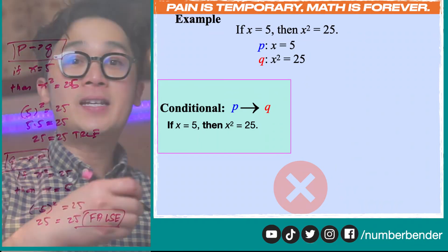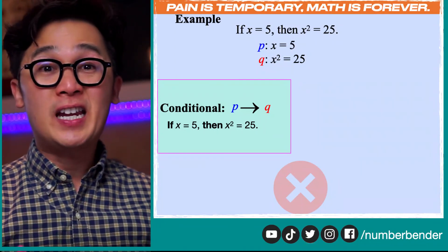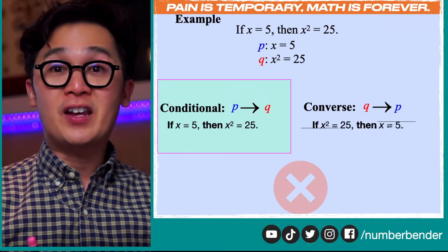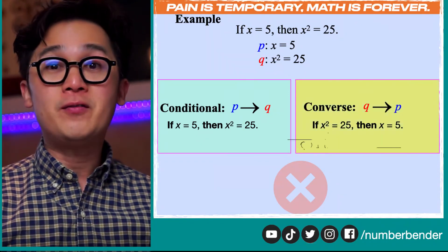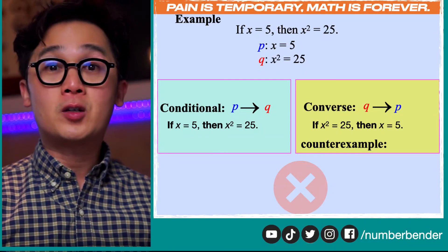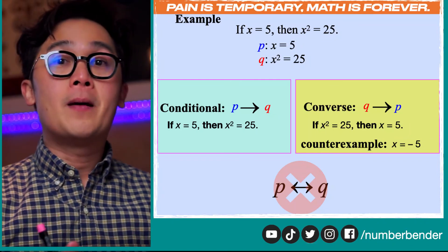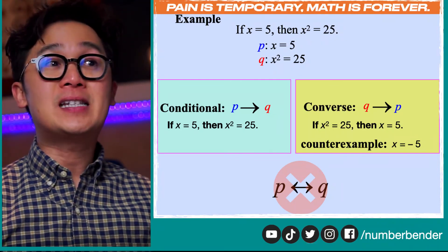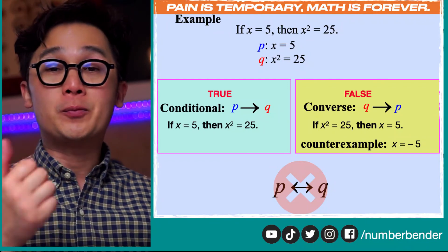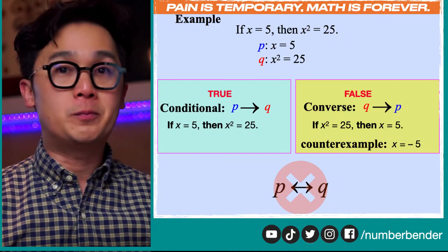This is an example of an invalid biconditional statement, because we found a counterexample for Q then P — if x² = 25, then x = 5 — where x = −5 makes the conclusion false. So this is not a valid biconditional statement. When working with biconditional statements, we need the conditional and its converse to both be true for the 'if and only if' form to also be true.